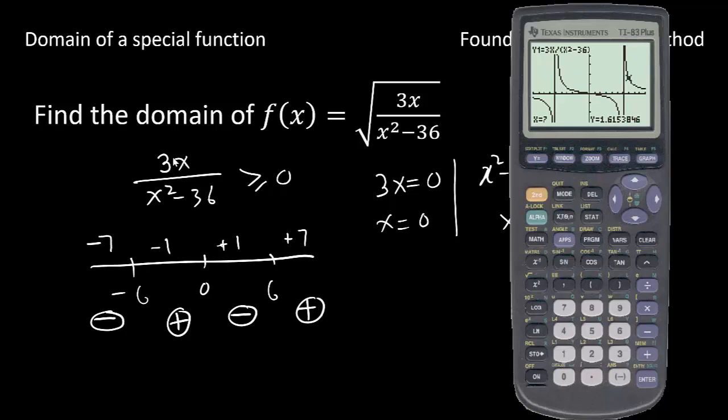We have 3x over x squared minus 36 should be greater than or equal to 0. And we have found that the portion positive here I have between negative 6 and 0. And the positive I have between 6 and infinity. This negative 6 is coming from denominator, this is from denominator, and this 0 is coming from numerator.